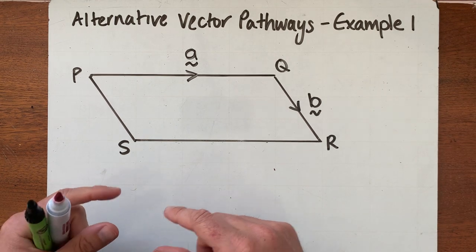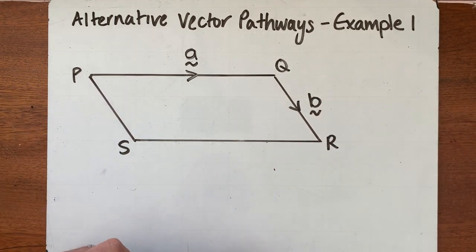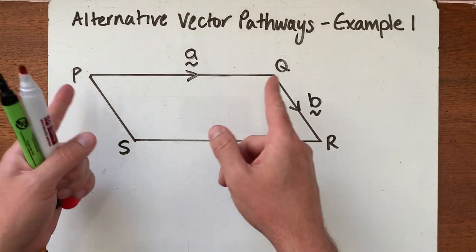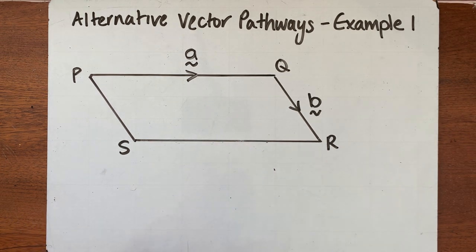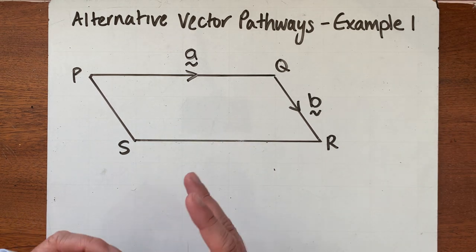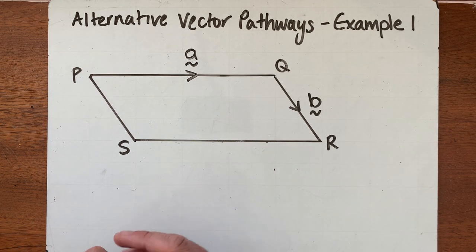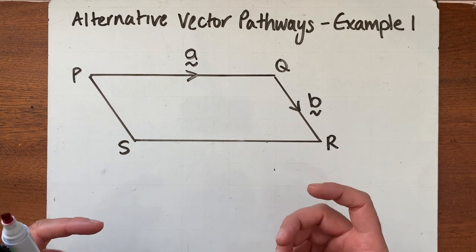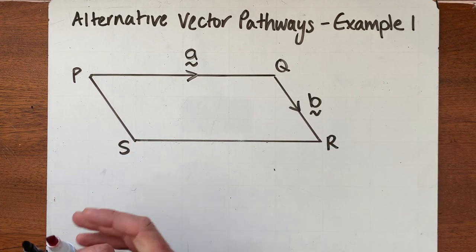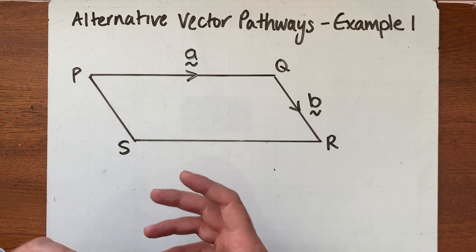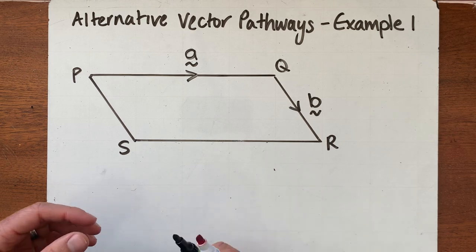Also, QR and PS are the same length as PQ and SR, and that's really important for the discussion we're about to have. So that's our parallelogram, and what we're going to be looking at today is the naming of vectors — you've already covered this in last week's lessons.